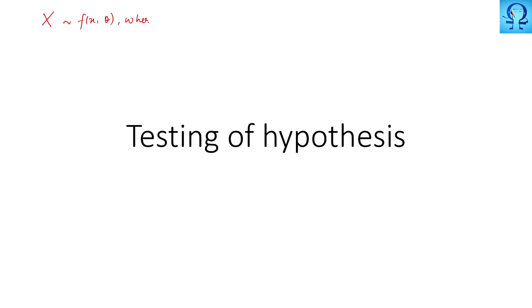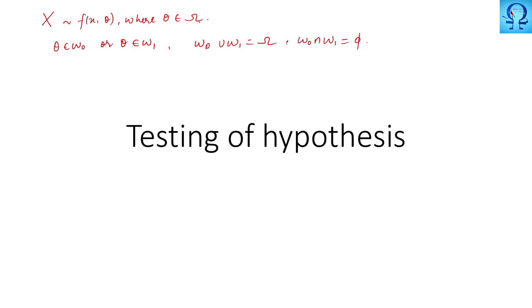This θ is taken from the suitable parameter space Ω. Suppose that θ belongs to ω₀ or θ belongs to ω₁, where the union of these two sets gives the whole set Ω, and these sets are disjoint. So basically, the big Ω is the set of all possible values that θ can take, divided into two disjoint sets — only either of these will be true.